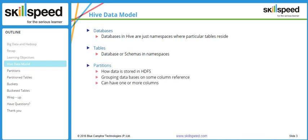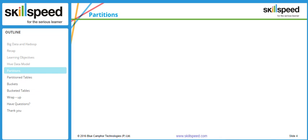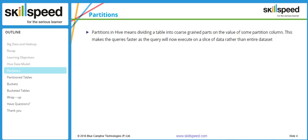Then you have something called partitions and buckets, which we will be seeing in detail in the coming slides. What exactly is a partition? Imagine that you have a very large Hive table with millions of entries in it. As months and years go by, this table will further get bigger. When you execute queries on this particular table, those queries will be really slow because of the size of the table. So Hive allows a concept called partitions, wherein you can divide this table into smaller-sized tables with a common key. Partitions means dividing a table into a coarse-grain part based on the value of some partition columns.